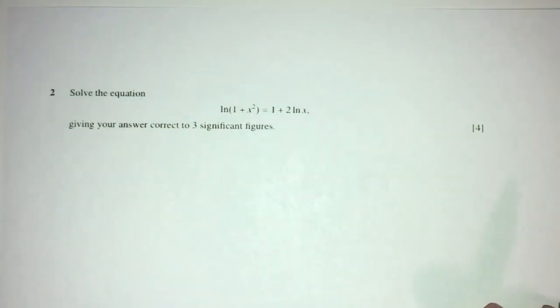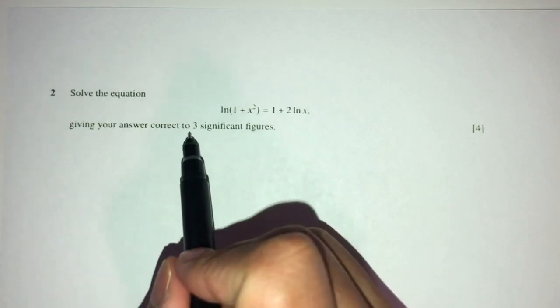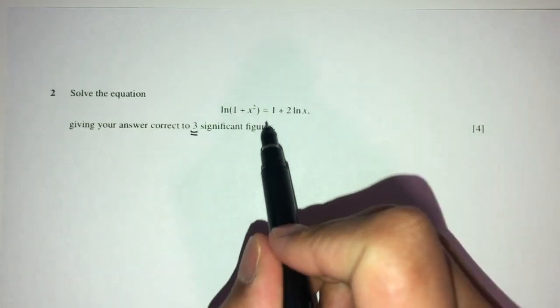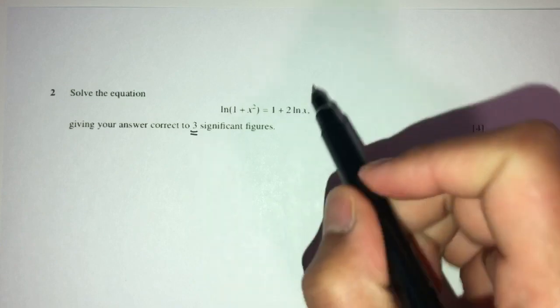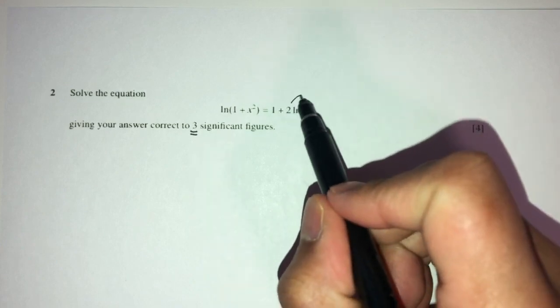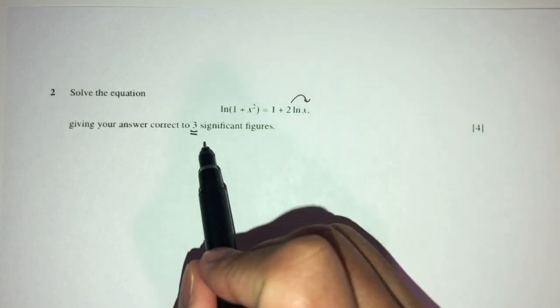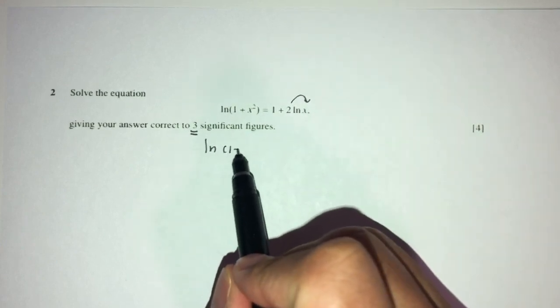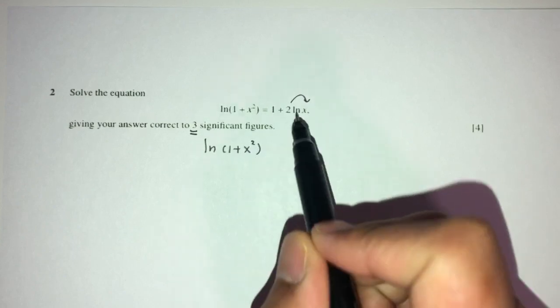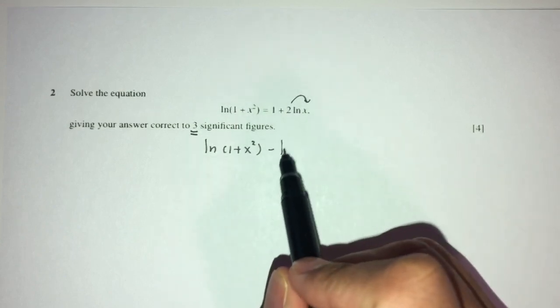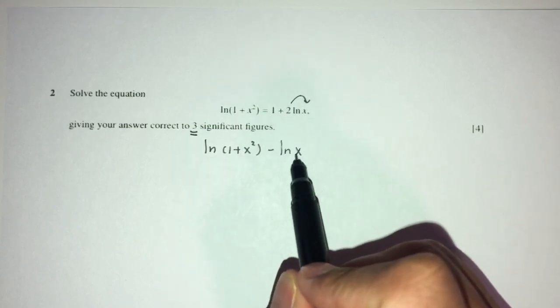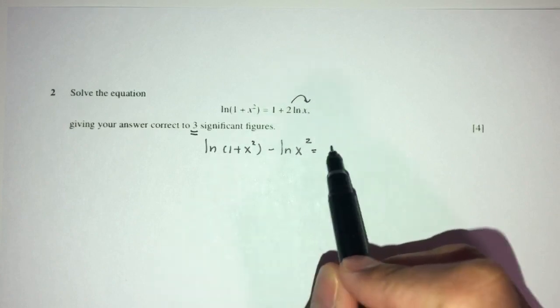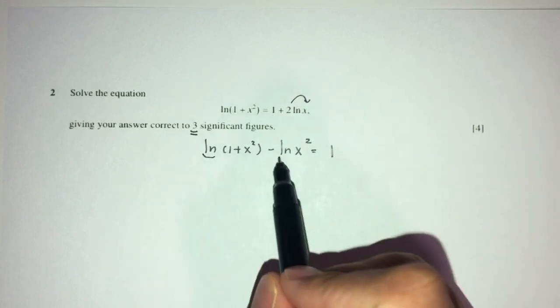Question number two: we have to solve this equation, finding the unknown x, giving the answer to 3 significant figures. First, we bring the power down using log rules, giving ln(1 plus x squared) minus ln(x squared) equals 1.